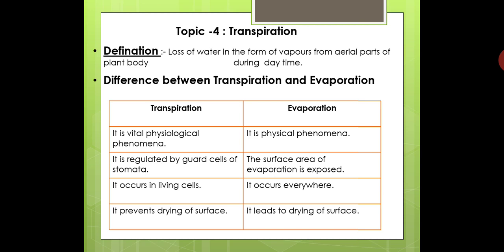So that is how we differentiate between transpiration and evaporation. The second point in this topic is the types of transpiration. The first type is called cuticular transpiration. The cuticle is a specific layer present on the surface of leaves, especially in xerophytic plants, which grow in dry desert areas and face the problem of water scarcity.